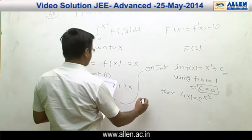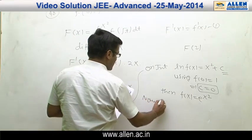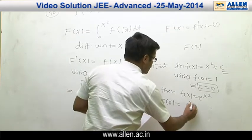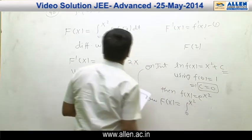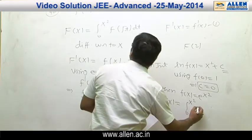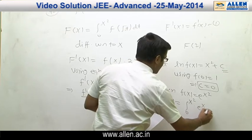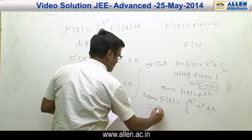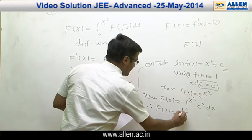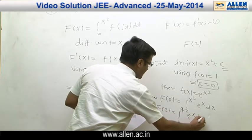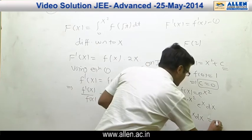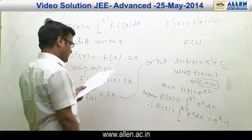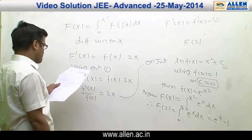Now, f(x) = integral from 0 to x² of e^x dx. Therefore f(2) = integral from 0 to 4 of e^x dx, and this becomes e⁴ − 1. Therefore the correct answer is option A.